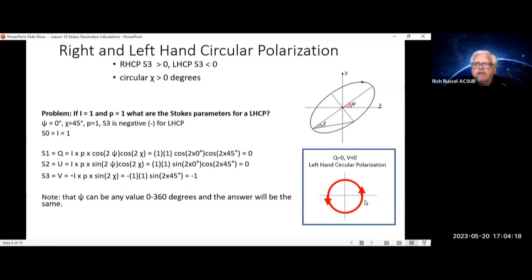Let's go to right and left-hand circular polarization. For this, if S3 is greater than 0, it's right-hand circular polarized. If S3 is less than 0, it's left-hand circular polarized. And in order to be circular polarization, chi has to be greater than 0 degrees.